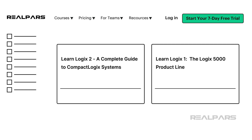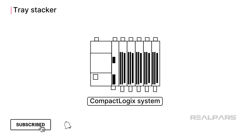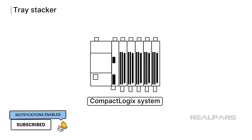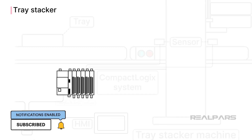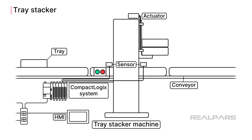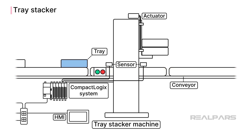Let's start by looking at the machine that we will break down in this video. We will see how a CompactLogix system can be used to control a Tray Stacker machine. The Tray Stacker has three conveyors that are used to transport trays through the machine.